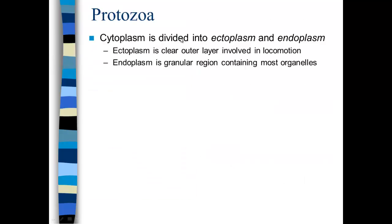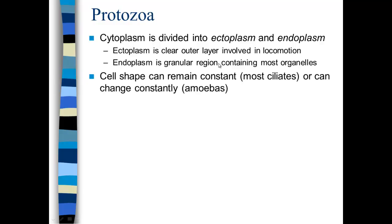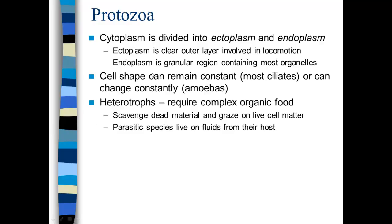In terms of protozoa, for locomotion the cytoplasm is divided into ectoplasm and endoplasm. Ectoplasm is more of a clear outer layer and it allows the protozoan to move. Endoplasm is more of the granular region, and that's where you find most of the organelles. Endoplasm is closer to the nucleus; ectoplasm is further away on the external portion of the cell. The cell shape can remain constant or it can change constantly, like amoebas. Protozoa are heterotrophs — they do not have chloroplasts, so they require complex organic food. They scavenge dead material, so they're saprobes, but they can also be parasitic and graze on live cell matter.